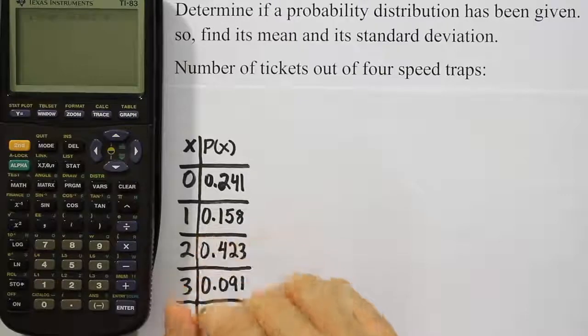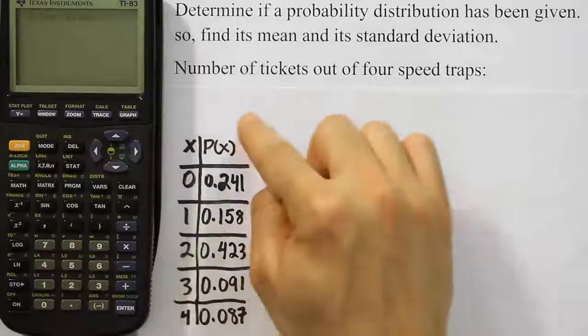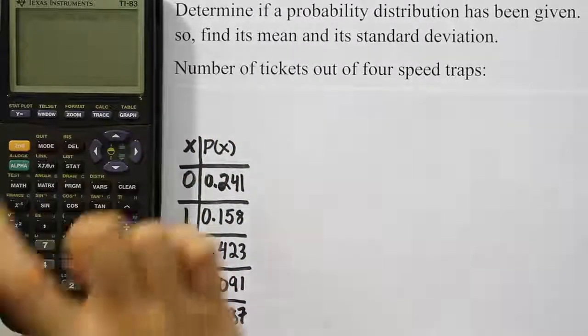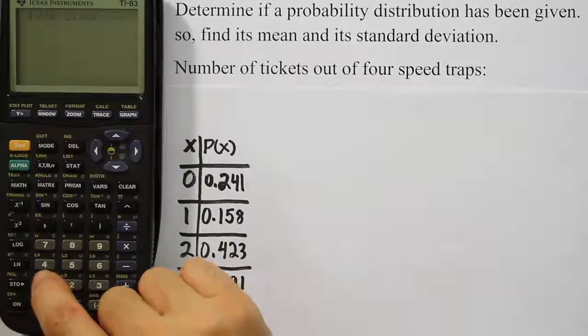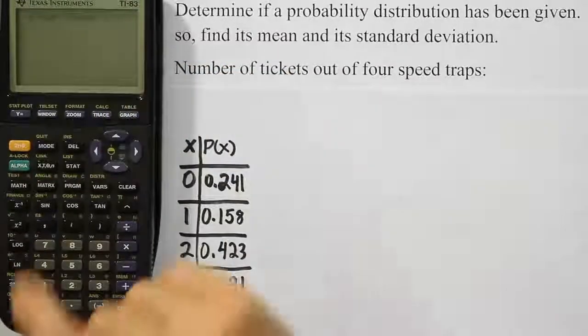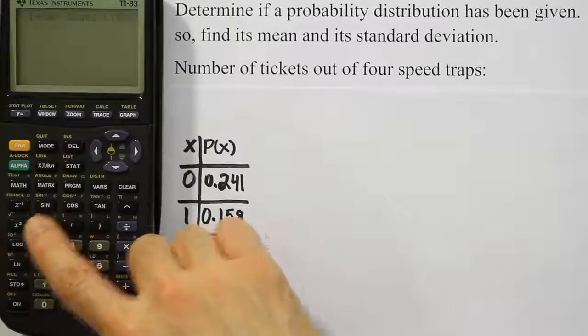Now the calculator is blinking at us. It wants to know what lists are involved in our calculation. So we need to tell it list 1 and list 2, because that's the way we entered the data. So I want to hit the second key and the number 1, which is going to bring up that little yellow L1 onto our screen. Then we need to hit a comma. The comma key is above the 7 on the calculator.